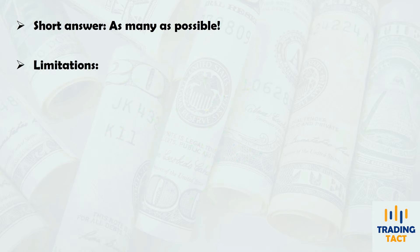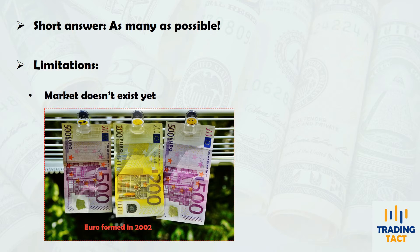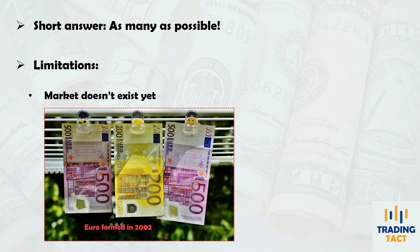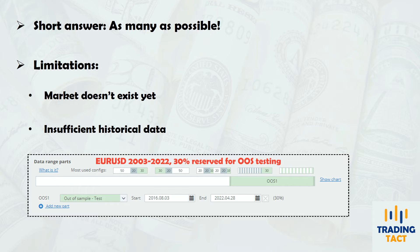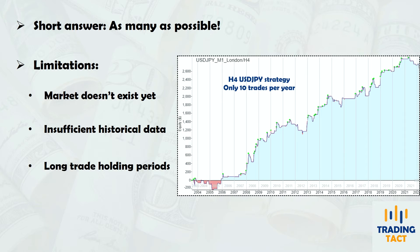You could face practical limitations regarding sample size for the following reasons. Firstly, perhaps your market hasn't even been in existence for that long. For many markets, it's also difficult to find quality historical data before the year 2000. And even if you do have the data, you may allocate a portion of it for out-of-sample testing. And lastly, if you're a part-time retail trader, chances are you trade the higher timeframes where the average holding period for your trades is much longer.